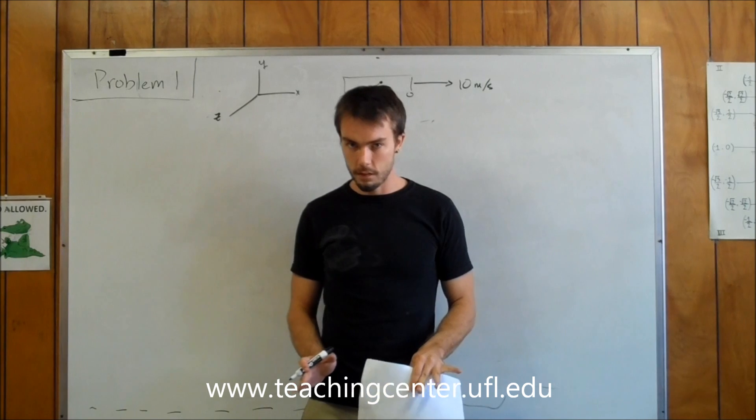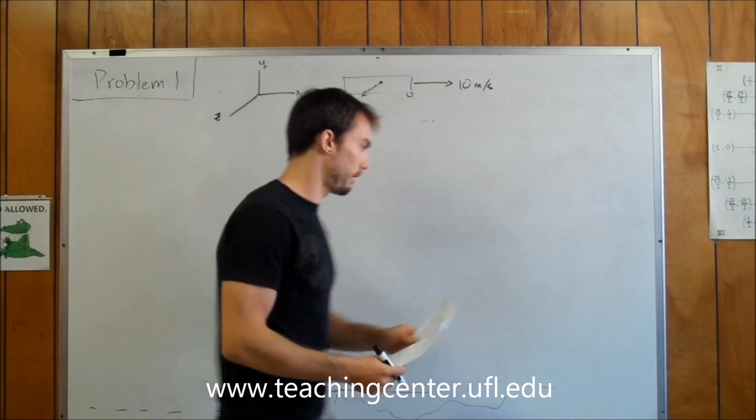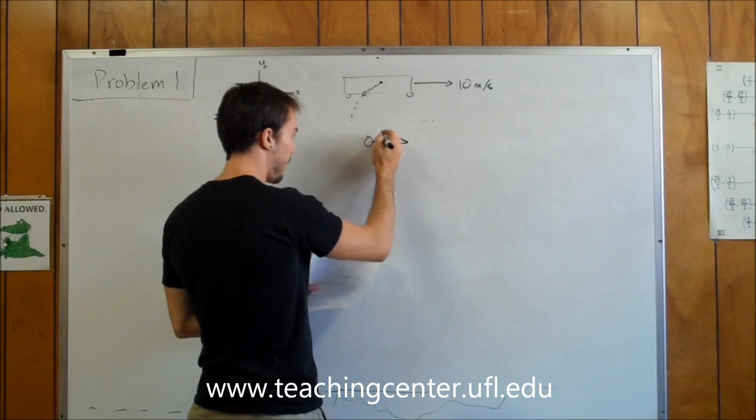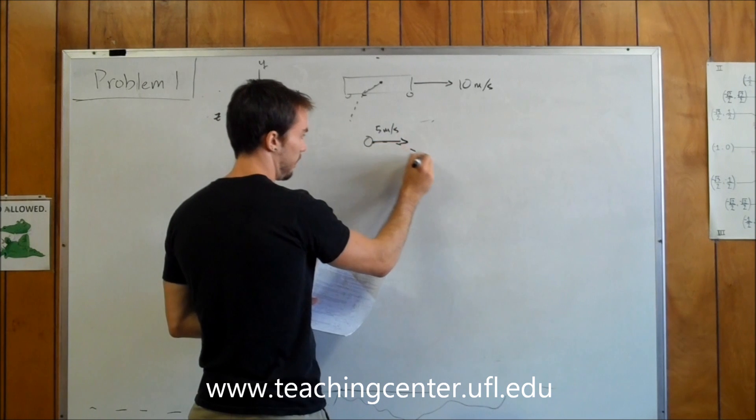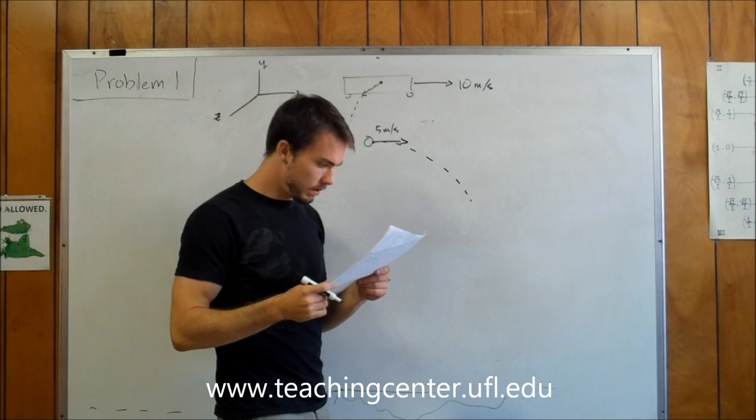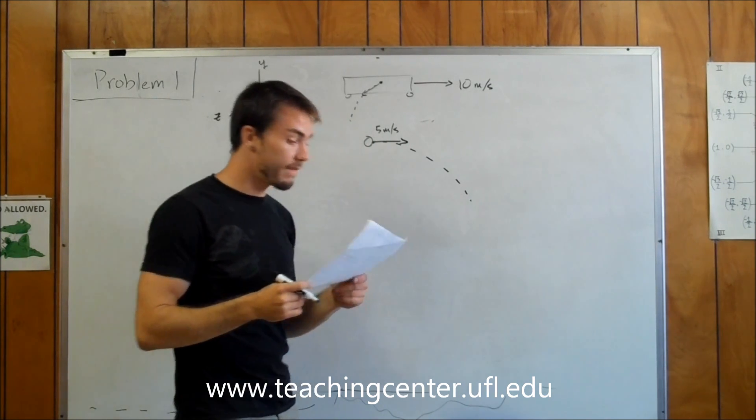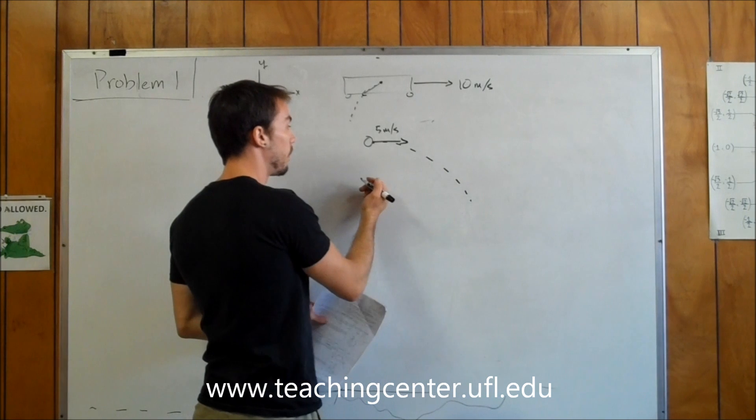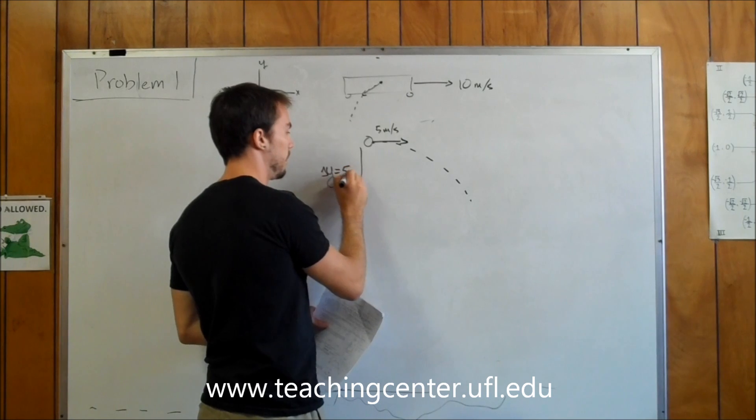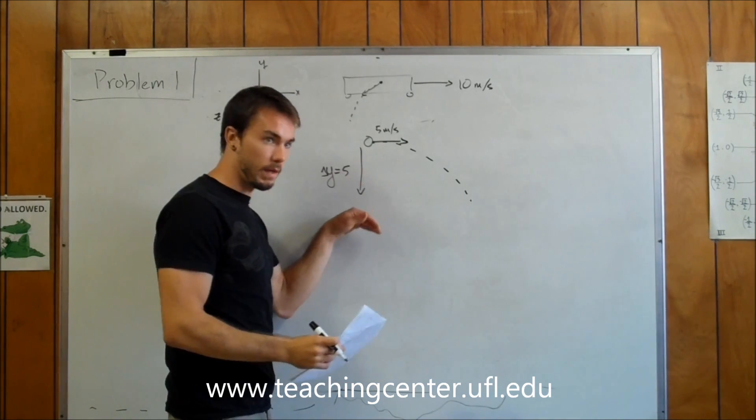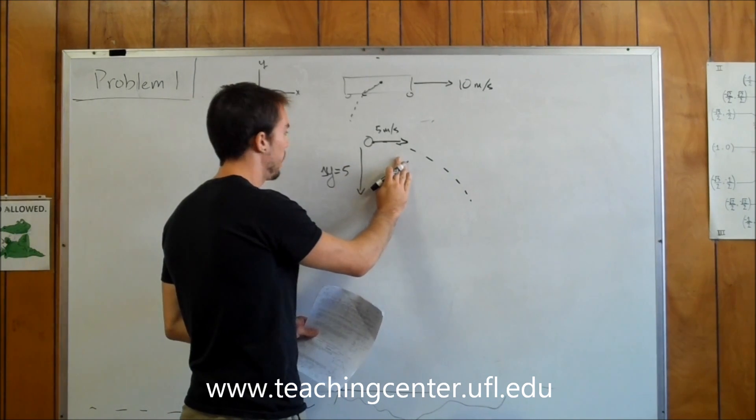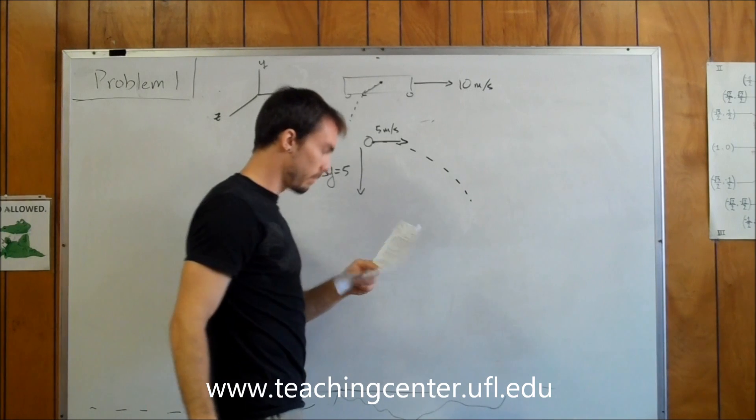Let's look at just the projectile motion part first. The ball is thrown horizontally out through the window at 5 meters per second in a parabolic path. The child throws it from a height of 5 meters above level ground, so we know delta Y equals 5 meters. It's traveling 5 meters down and 5 meters horizontally. That should be all we need.